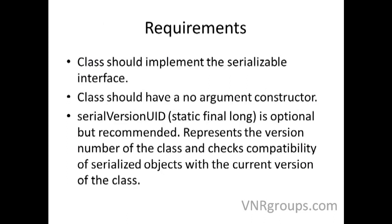What are the requirements for a class to be serializable? The class should always implement the Serializable interface. It should always have a no-argument constructor. And finally, there is an optional attribute called serialVersionUID, which represents the version number of a class. It checks the compatibility of a serialized object with the current version of the class. If you have saved a file to disk with a certain serialVersionUID and then later change your class, the class and the serialized object will not be compatible because they have different serialVersionUIDs.